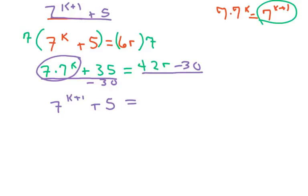And I'm going to go ahead and factor out a 6, and I'm going to get 7r minus 5. Now I'm going to let this equal t, because it doesn't matter what this equals. We know that this is divisible by 6.